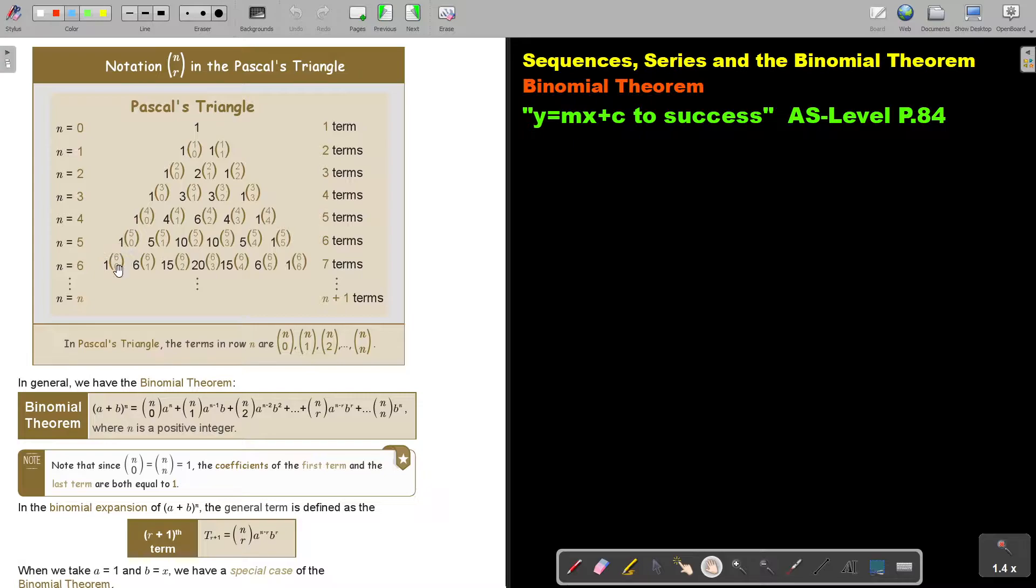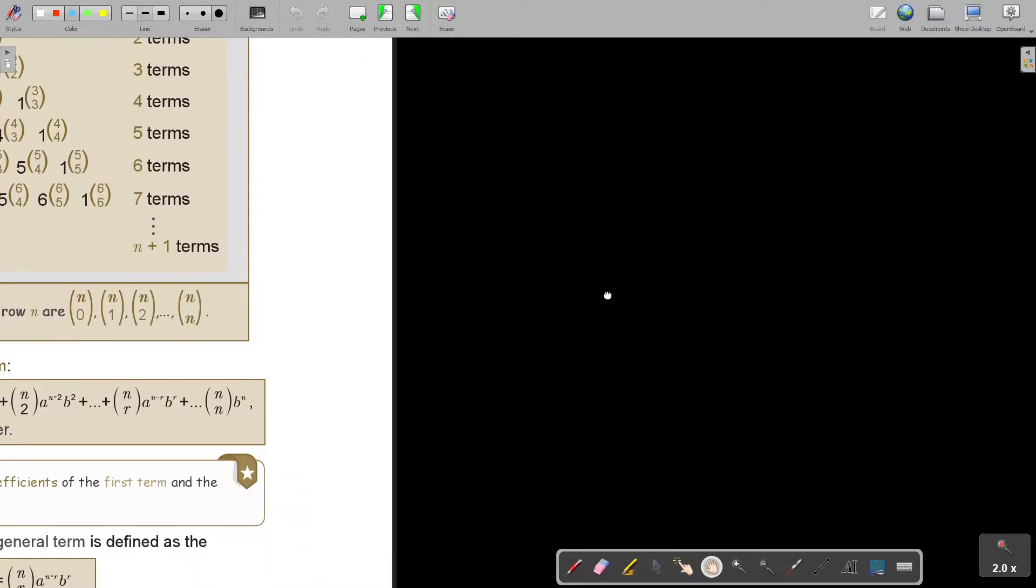So this is the sixth row: (6,0), (6,1) until you are at (6,6). In Pascal's triangle, the terms in row N are N0, N1, N2, up to there. Let's just make it a bit bigger so you can see better.